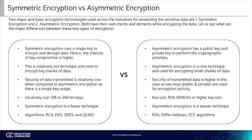The usual key size used in symmetric encryption is 128 or 256 bits, while asymmetric encryption typically uses RSA 2048-bit or higher key sizes. Symmetric encryption is a faster technique compared to asymmetric encryption due to its very low level of complexity. Algorithms used in symmetric encryption include RC4, DES, 3DES, and Blowfish, whereas RSA, Diffie-Hellman, and ECC algorithms are used for asymmetric encryption.